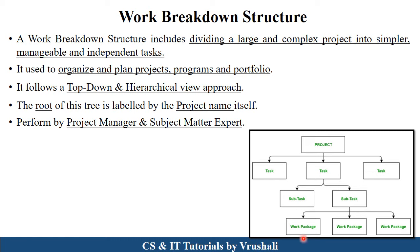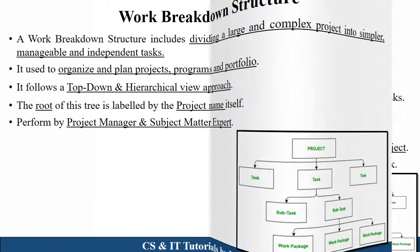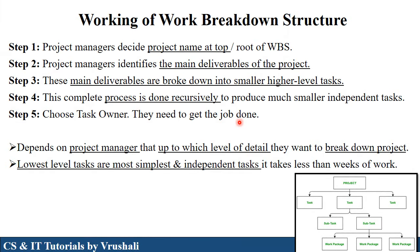There is a top-to-down approach. Now let's discuss this structure in detail. In WBS structure, the first root node is always a project name. The project manager decides a project name — for example, College Management System application. This is the name of the project and this is the root node.